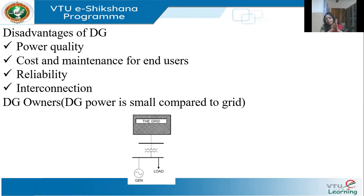DG does have some disadvantages. One is poor power quality. Almost all distributed generation technologies use power electronics, and power electronic devices like rectifiers and inverters cause a lot of power quality problems — as we have already seen in previous chapters. This is one of the main problems with distributed generation.